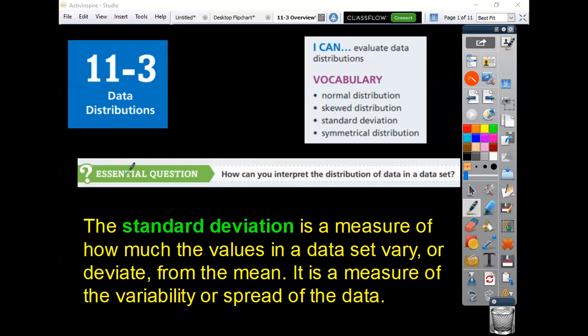So you got your data distributions. A normal distribution is a bell curve. Skewed has like a tail off to the left or the right. Here's a skewed left. This would be skewed right for your shape of the graphs.